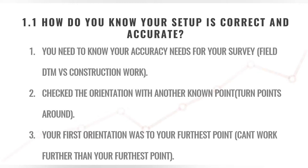I've listed three main points here to consider, but there are literally thousands more. The first one is you need to know what your accuracy needs are for your survey. There are different accuracy needs. When you do a DTM, or digital terrain model, which is mostly for contouring or getting a tree position — basic stuff — your accuracy expectation will be about 50mm.